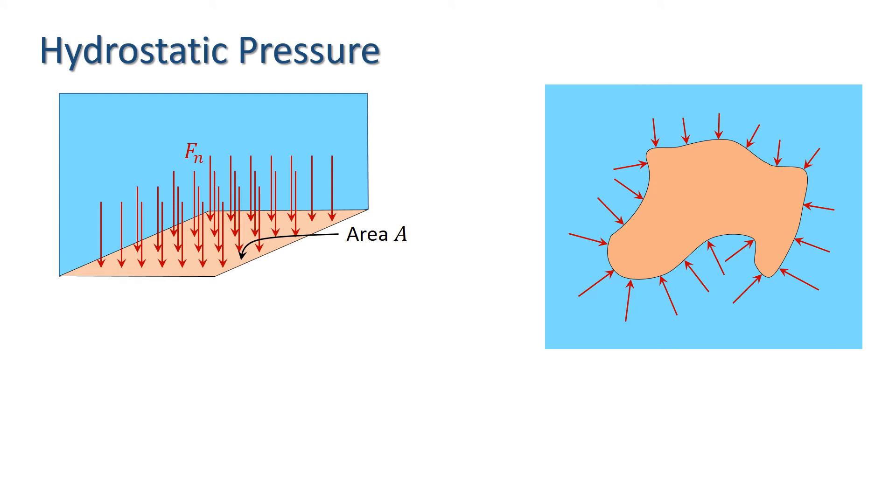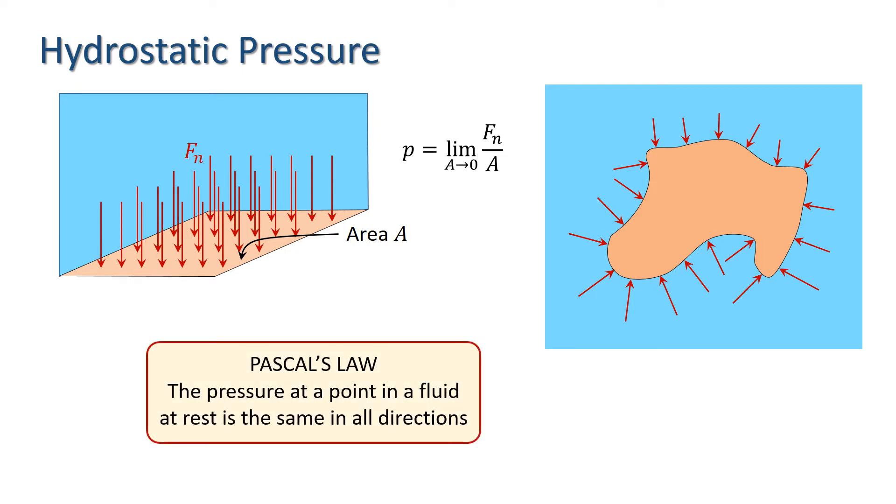So let's take a closer look at pressure. The pressure at a point on a plane surface is defined as the limit of the ratio of normal forces on the area as the area approaches zero at that point. From this definition, we can deduce Pascal's law, which states that the pressure at a point in a fluid at rest is the same in all directions. Let's have a look at where that comes from.